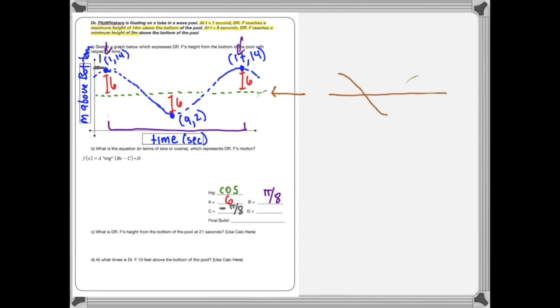For D, this is the equilibrium line. When you take a cosine graph and shift it vertically, the equilibrium replaces the x-axis. That line is at 2 meters above the bottom of the pool, plus an additional 6. So the equilibrium line is going to be at 8. We're shifting upwards, so D equals 8.